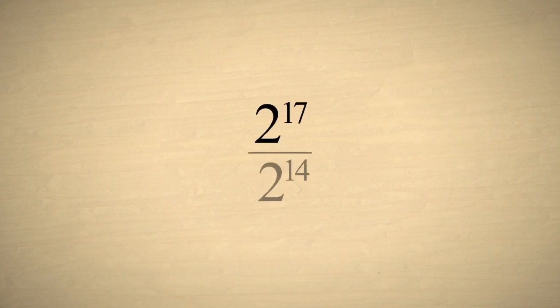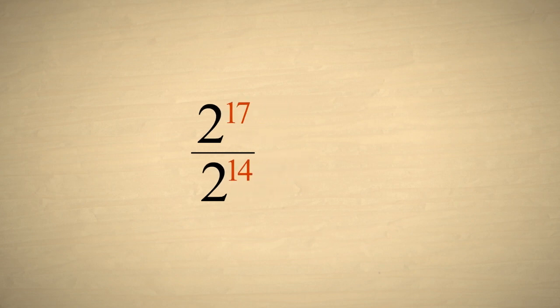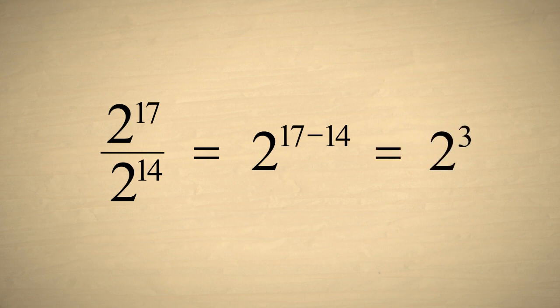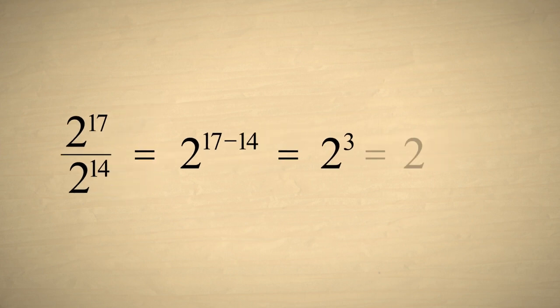Now let's simplify a numerical expression: two to the seventeenth power divided by two to the fourteenth power. These two exponential terms have the same base, two. So we can subtract their exponents, which gives us two cubed. Two cubed, of course, is two times two times two, which is equal to eight.